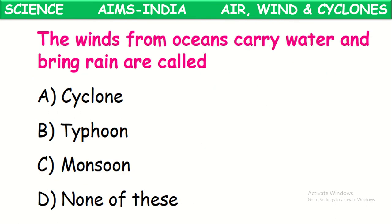The winds from the oceans carry water vapor and bring rain. This is called monsoon. The winds from the oceans carry water vapor in the form of clouds, which convert into rain. This occurs at a particular period in the year in different places.